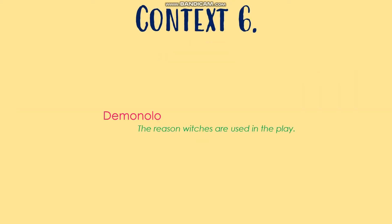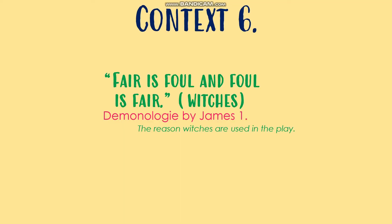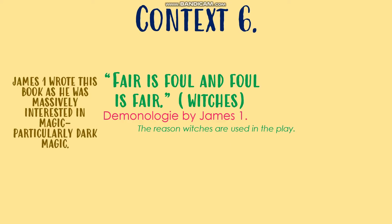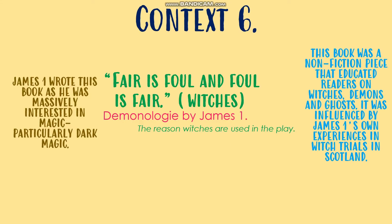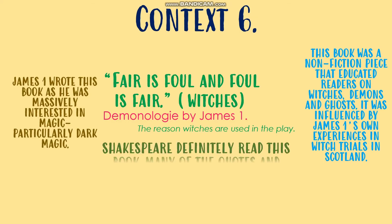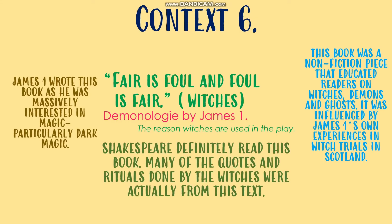Context piece number six is the reason why witches are used in the play. James I actually wrote a book called Demonology, because he was very interested in dark magic. This was a non-fiction piece that basically taught readers about demons, witches, and ghosts — all things influenced by the witch trials he saw while he was just King of Scotland. Shakespeare definitely read this book, and he actually included some of the quotes and rituals from it in the play Macbeth. So that's a really good thing to mention for context six.